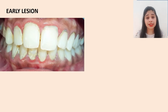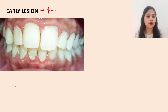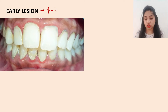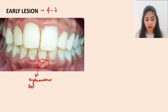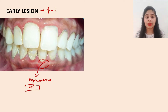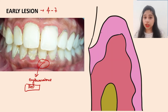Stage 2 is the early lesion, occurring between four to seven days. Clinically, we can now see all the signs and symptoms associated with inflammation. The gingiva is slightly erythematous, and there is bleeding on probing. Bleeding on probing is an indicator that the lesion has progressed into the early lesion stage.